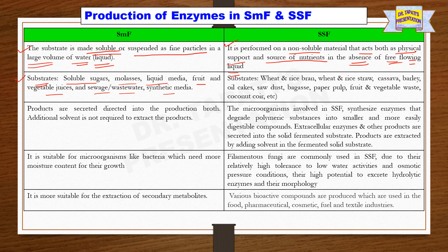But in the case of SSF, solid substrates are used, such as wheat and rice bran, wheat and rice straw — meaning mostly different agro-residues. These include cassava, barley, oil cakes, sawdust, bagasse, paper pulp, fruit and vegetable waste, coconut coir, etc.